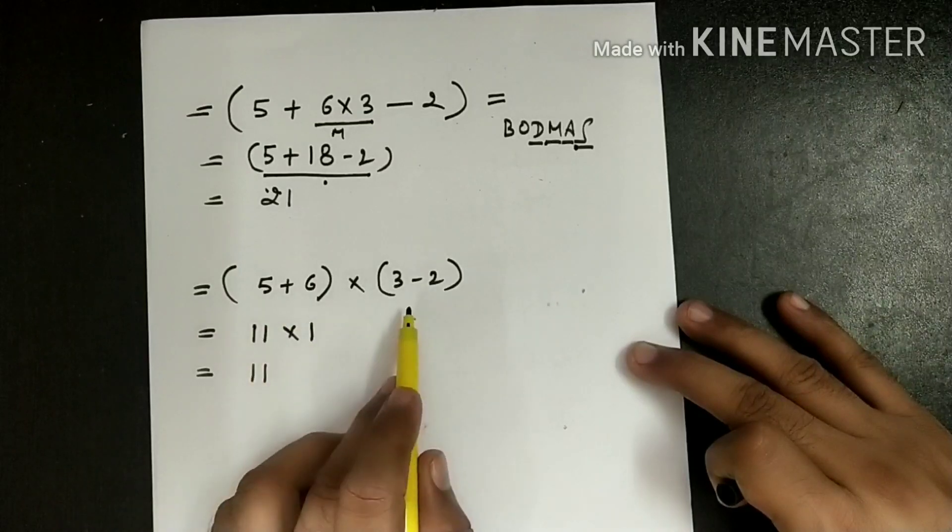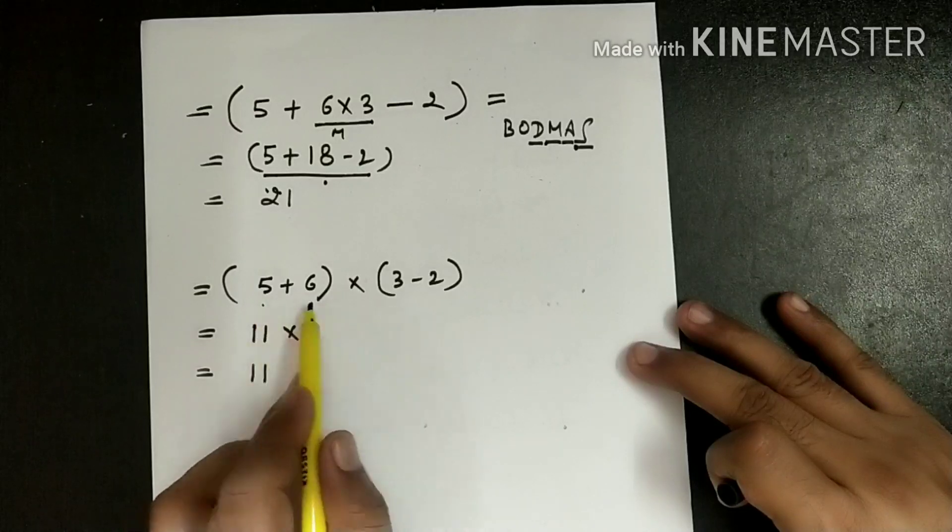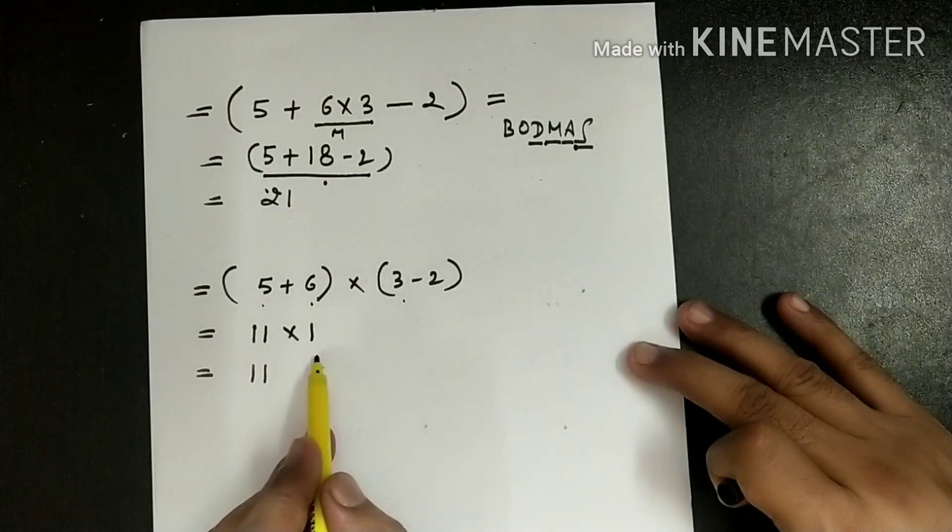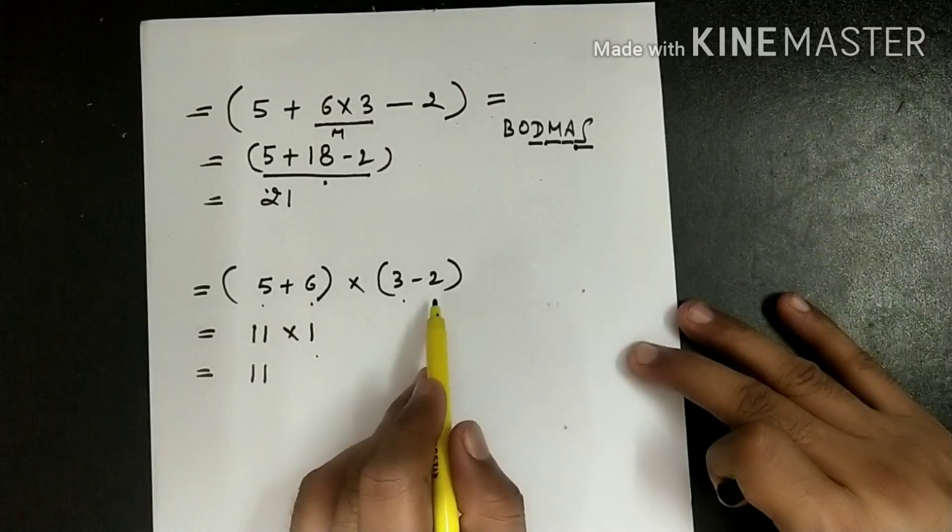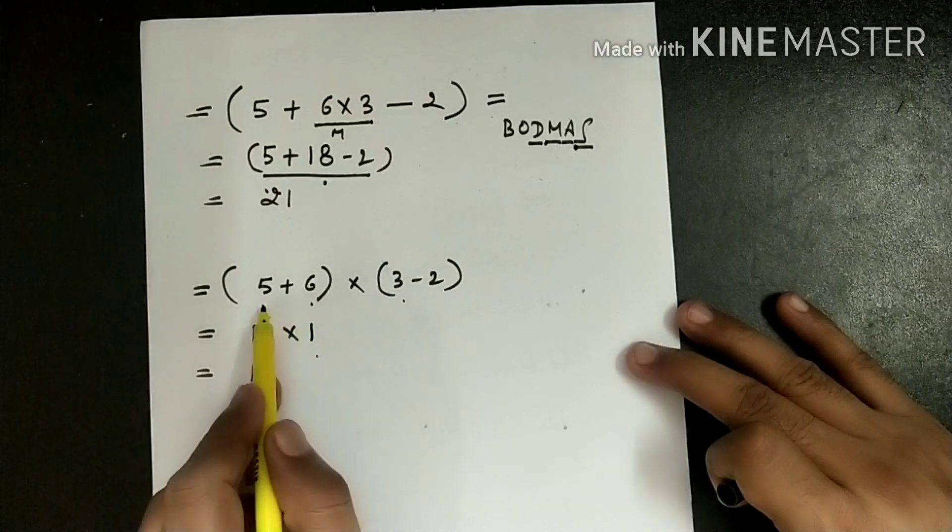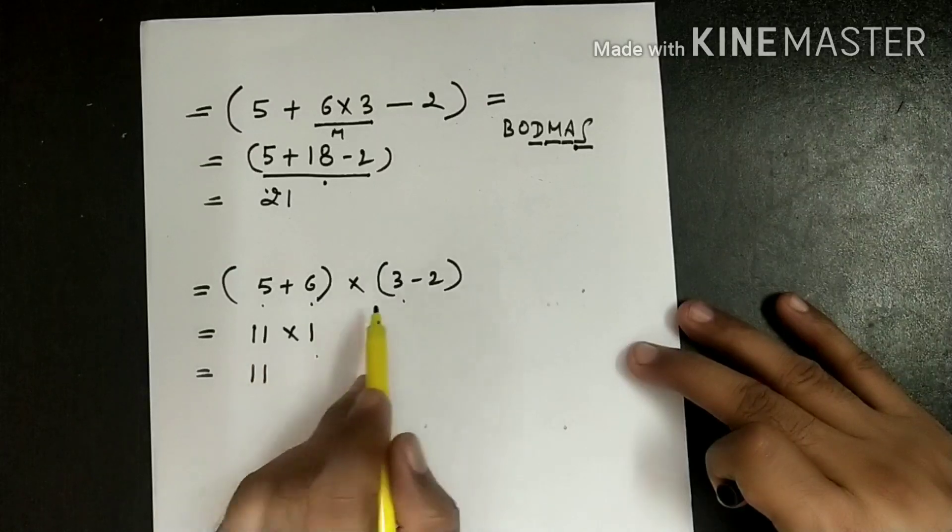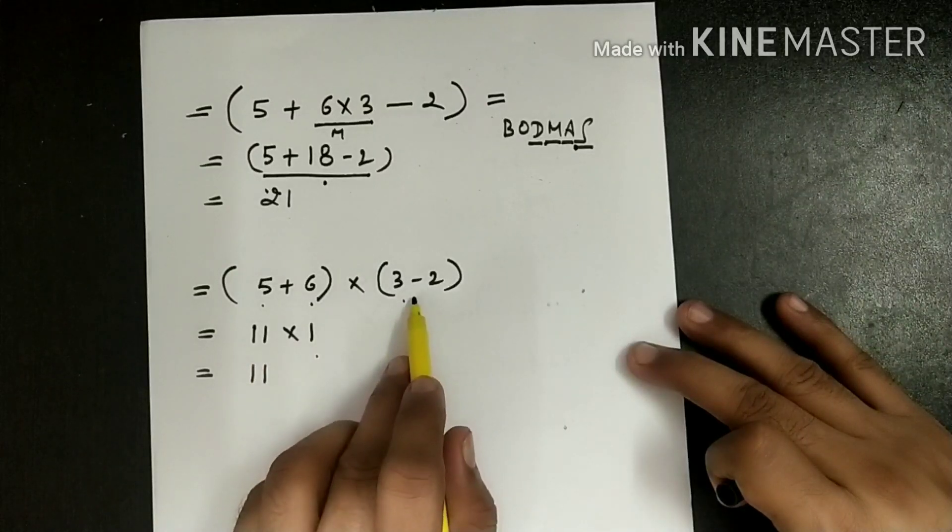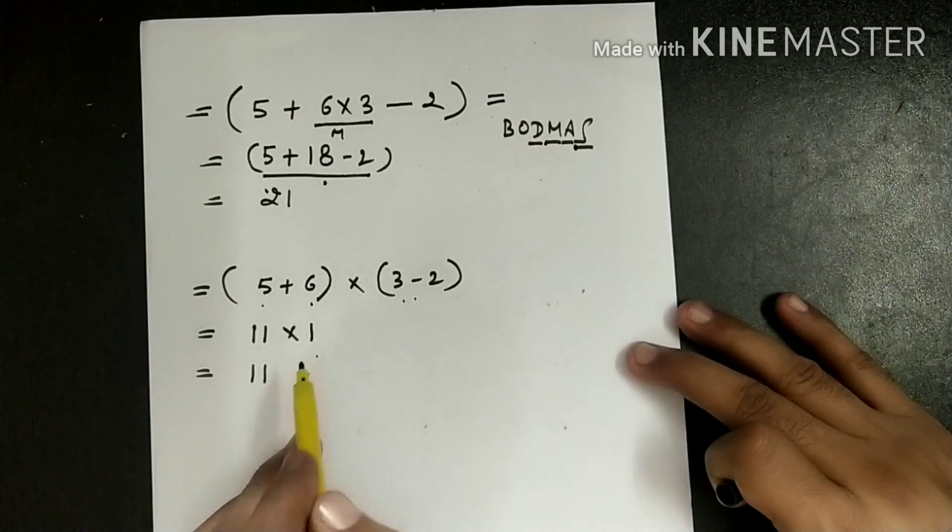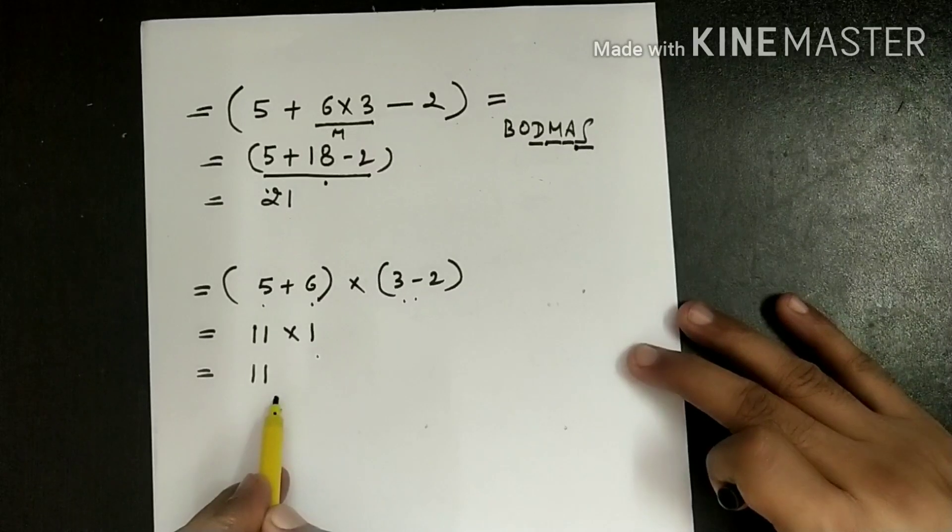now we have to respect the bracket. What we will do is it's 5 plus 6 is 11, and 3 minus 2 is 1. So first we will solve the bracket, so within the bracket it's 5 plus 6, which is giving us the answer 11. And now if we multiply this, we are getting answer 11.